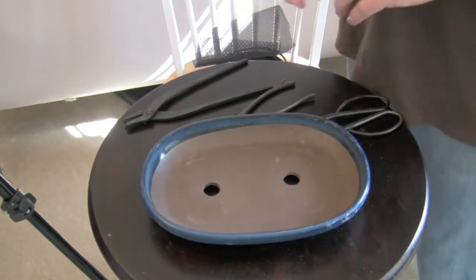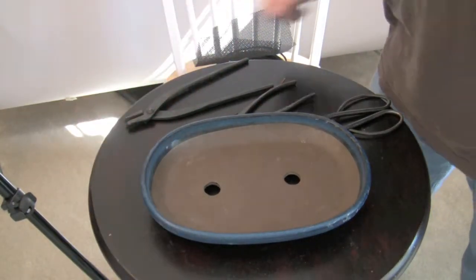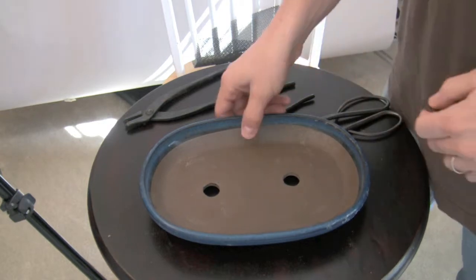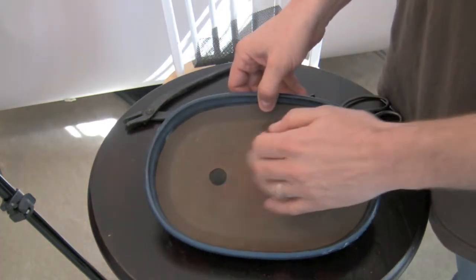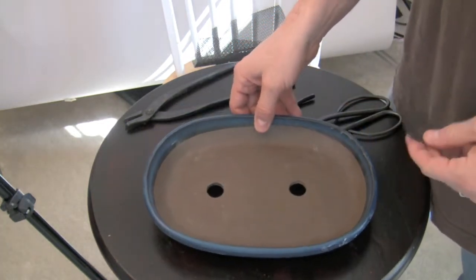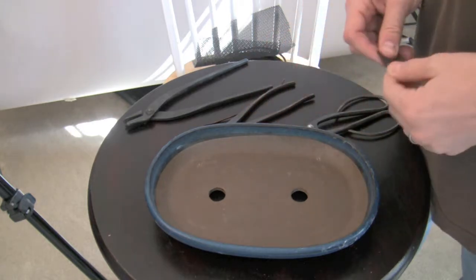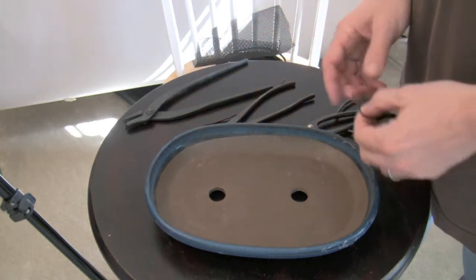There's a lot of ways to prepare your bonsai pot before you use it, but one of the most important things is to cover the drain holes. Otherwise all your soil mix is going to leak out of the bottom of the pot. I just want to go over the proper way to install these screens.